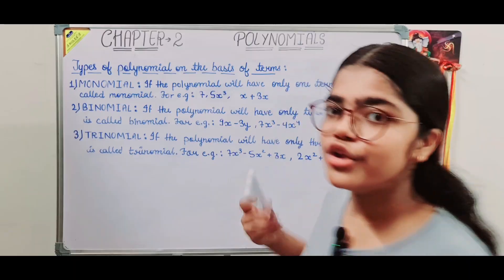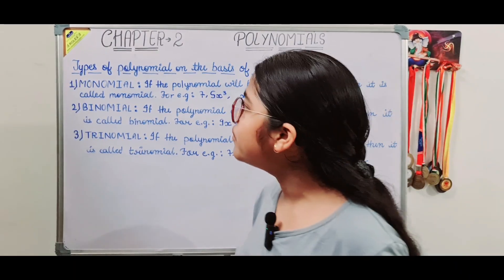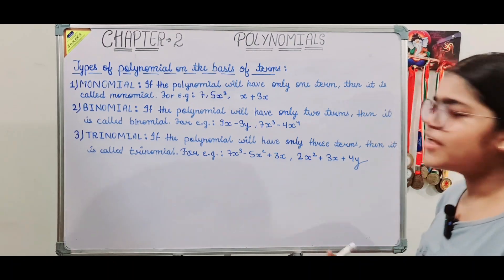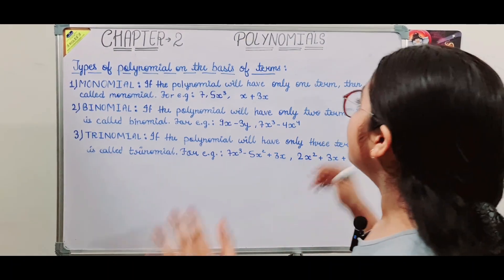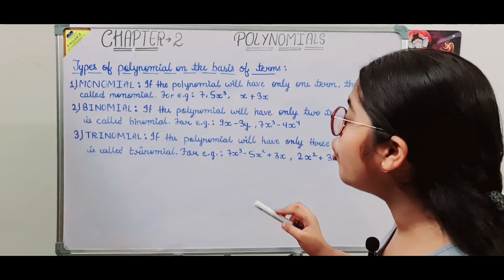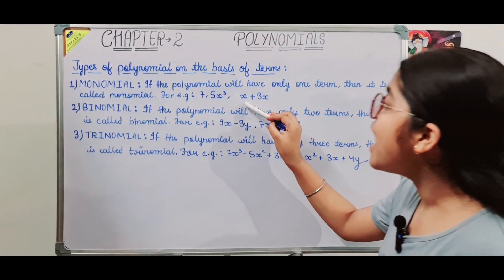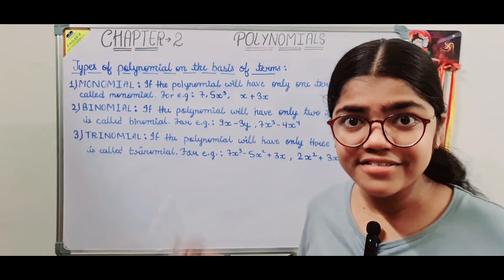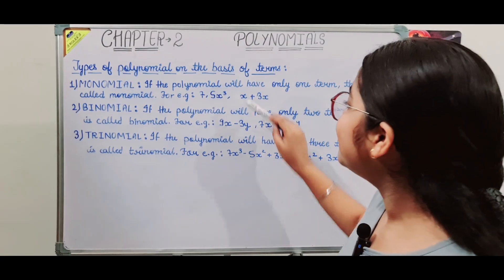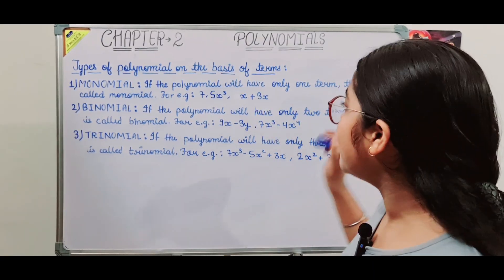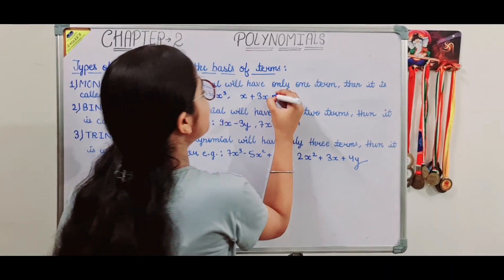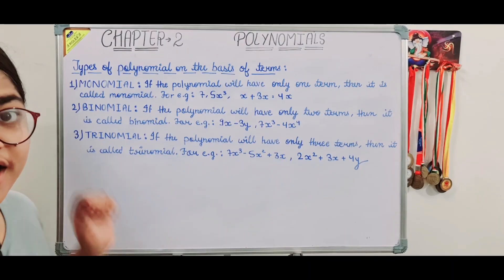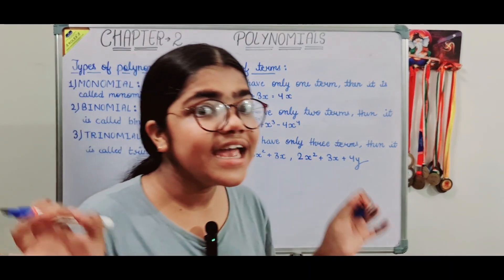First, what is a monomial? A monomial is a polynomial with only one term. Examples: 7, or 5x cubed. If we have x plus 3x, there are two terms — but since they are like terms, we can add them to get 4x, which has one term. So 4x is a monomial.